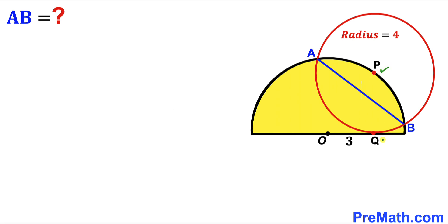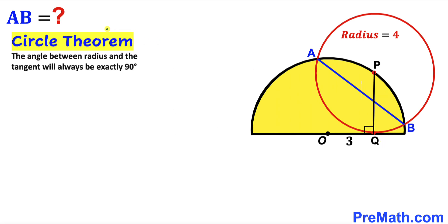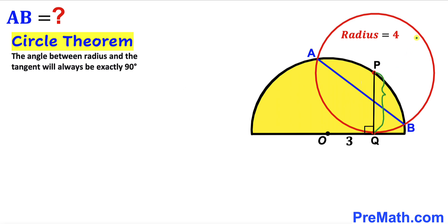...center P with the point of tangency Q. Now let's recall the circle theorem: the angle between the radius and the tangent line will always be 90 degrees. So angle OQP is 90 degrees, since PQ is the radius of the red circle and the line is tangent. Since PQ is the radius of the red circle and the radius is 4, PQ is 4 units.